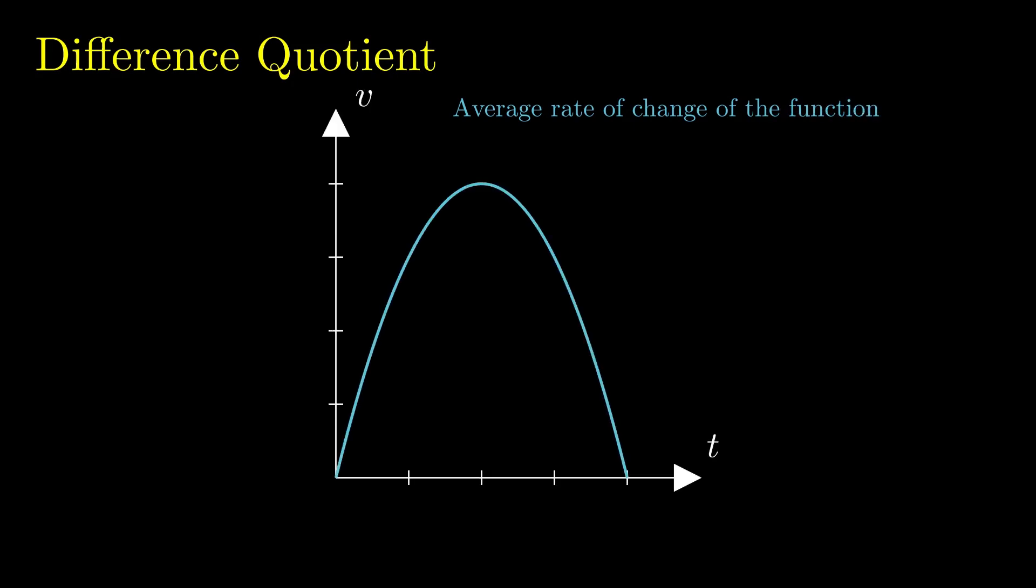To illustrate it, consider the velocity versus time graph in which at 1 and 3 seconds the velocity is v1. Between the interval, the body speeds up to v2 in the first second and slows back down to v1 in the second.